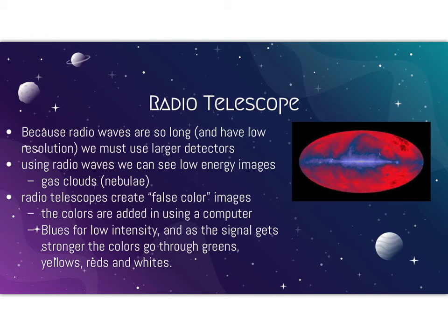Using radio waves, we can see low-energy images like gas clouds or nebulae. Radio telescopes create false-color images — the colors are added in using a computer. We use blue for low-intensity waves, and as the signals grow stronger, the colors go to greens, yellows, reds, and whites. So this area shows a stronger signal than the middle of whatever we're looking at.